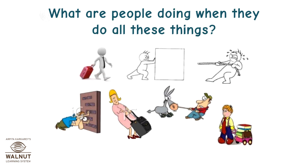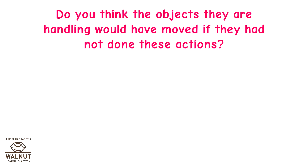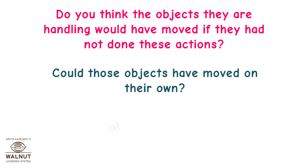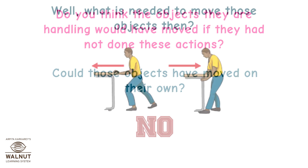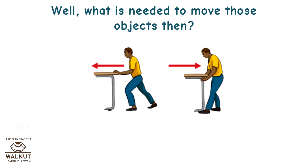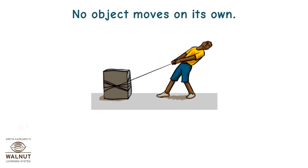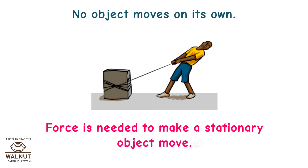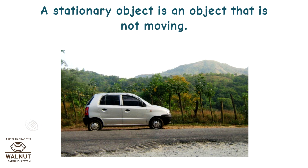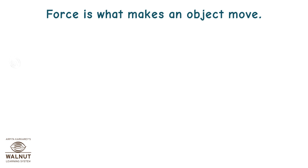What are people doing when they do all these things? Do you think the objects they are handling would have moved if they had not done these actions? Could those objects have moved on their own? No. What is needed to move those objects then? Some force. No object moves on its own. Force is needed to make a stationary object move. A stationary object is an object that is not moving. Force is what makes an object move.